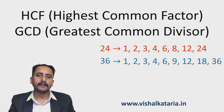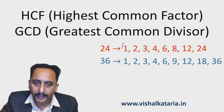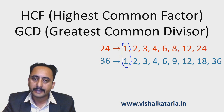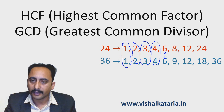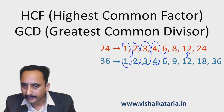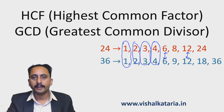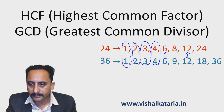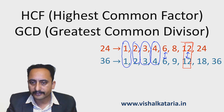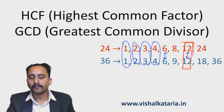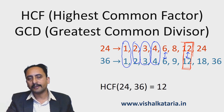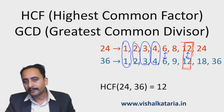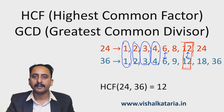If you observe carefully, 1 is a common factor of both numbers. Similarly 2 is a common factor, 3 is a common factor, 4 is also a common factor, then 6, and after 6 the next is 12 — and 12 is the last common factor. Out of these common factors, the highest common factor is 12. HCF is nothing but the highest common factor of given numbers, so the HCF of 24 and 36 is 12.